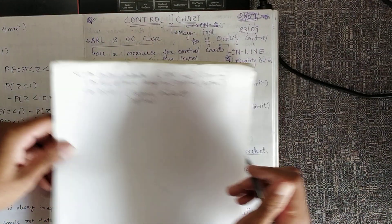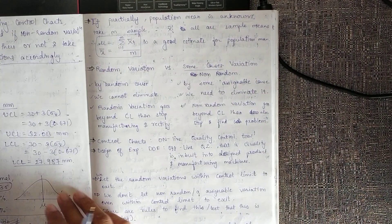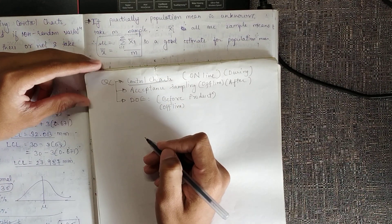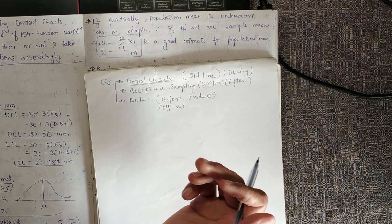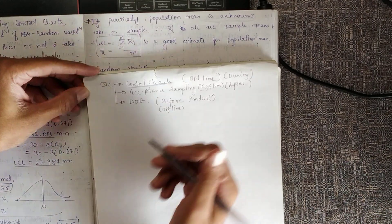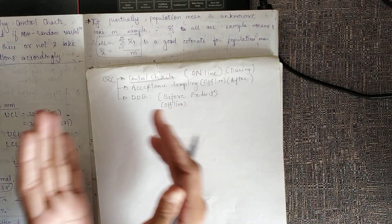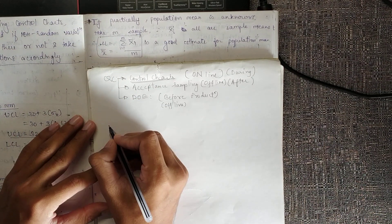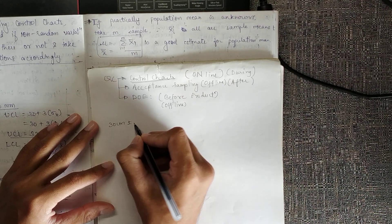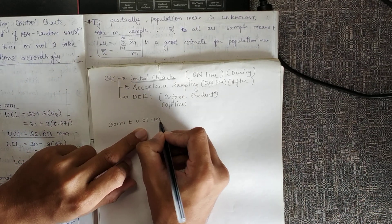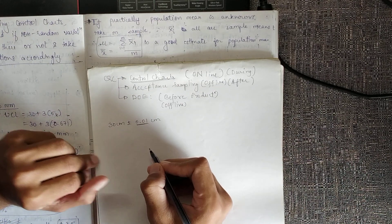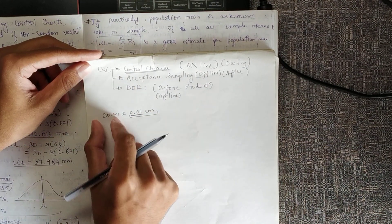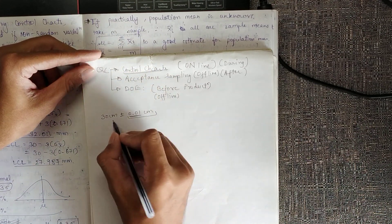In the control chart method, during production we record the dimensions of our product and try to keep them within a specified range. There is a limit specified by the customer — for example, if he asks for a 30 cm scale, he may tolerate a range of plus or minus 0.01 cm. This error is tolerated because of manufacturing inabilities — we cannot perfectly manufacture a 30 cm scale.